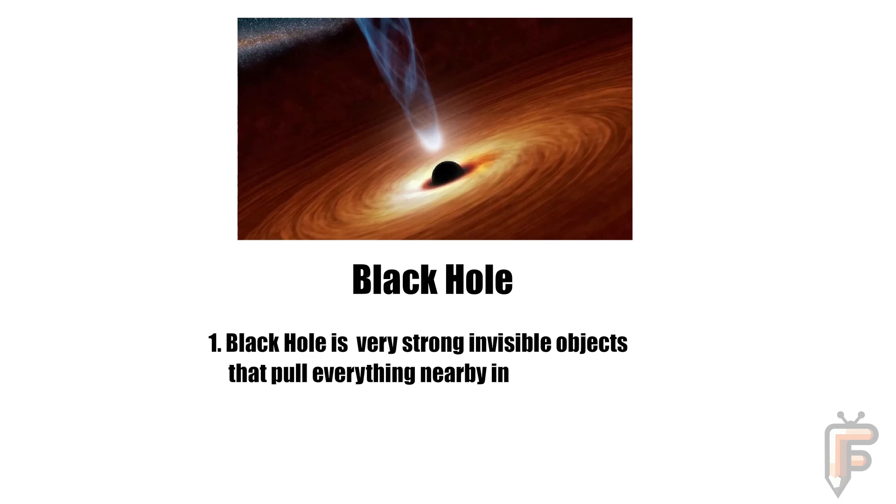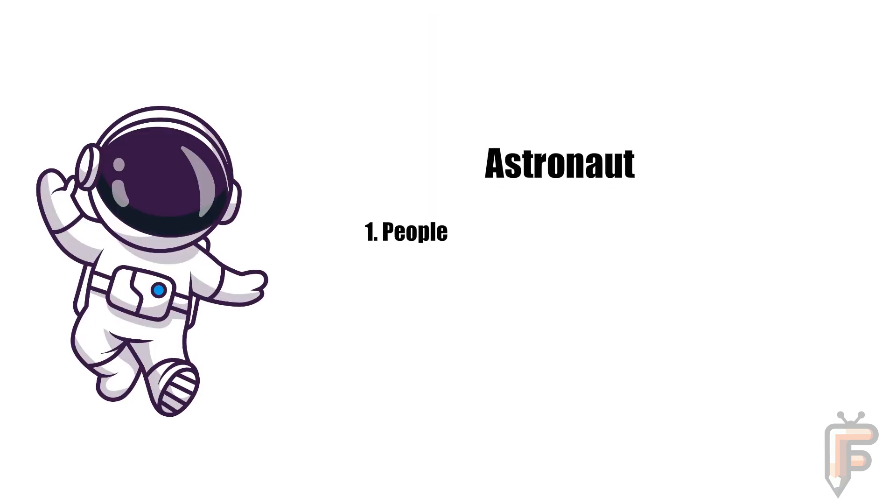A black hole is a very strong invisible object that pulls everything nearby in. Even light can't escape a black hole. Astronauts are people who travel to space. They wear special suits and float in space.